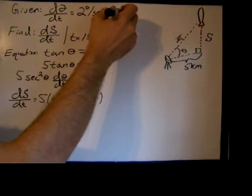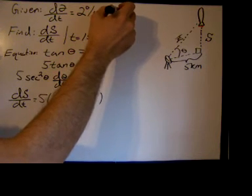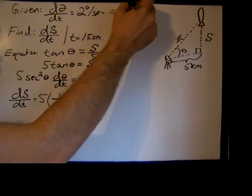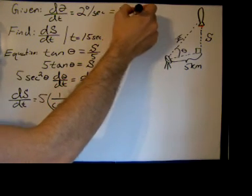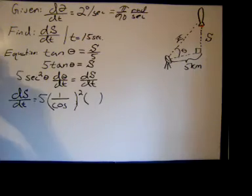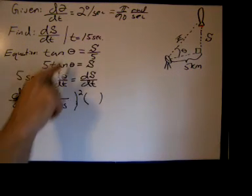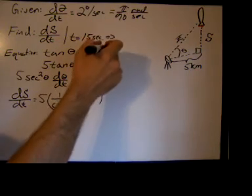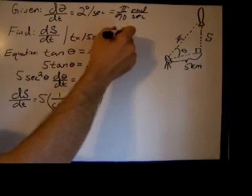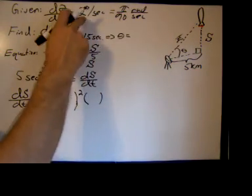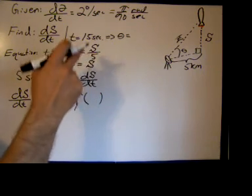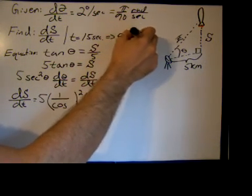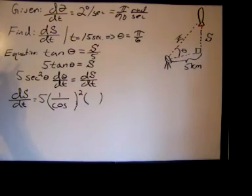So 2 degrees per second in radians is 2 times pi over 180 degrees, which is pi over 90 radians per second. And we need an angle - well, t equals 15 seconds implies that theta equals 2 times 15 is 30 degrees, and 30 degrees in radian measure is pi over 6, a special angle.